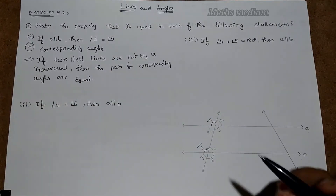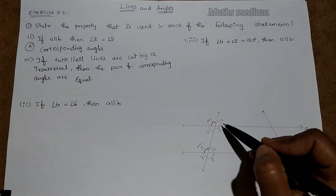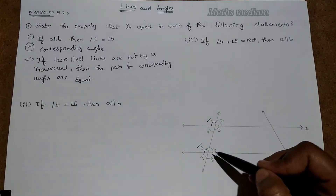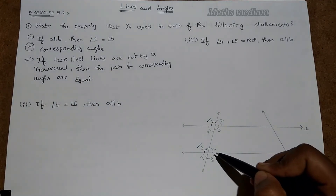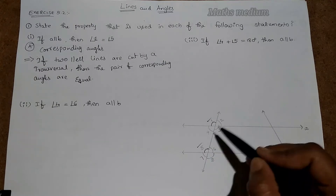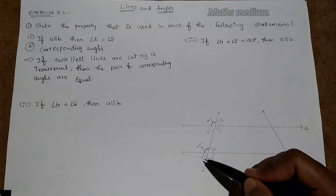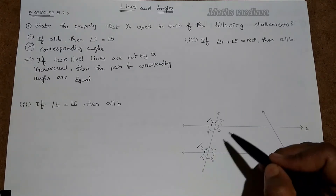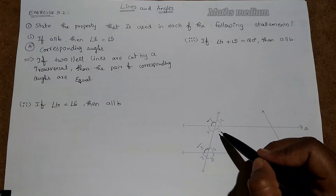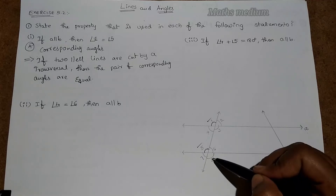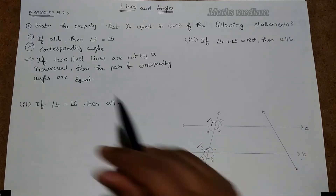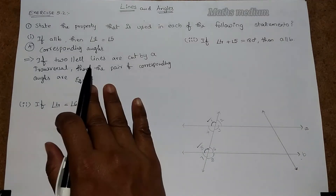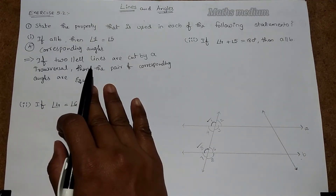Similarly, angle 2 and angle 6 are also equal to each other; angle 4 and angle 7 are also equal to each other; angle 3 and angle 8 are also equal to each other — according to the corresponding angle property.